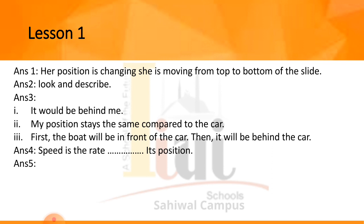Question number 5: write three examples of objects that move at variable speed. Examples include a bicycle, car, boat, surfboard, or a bus. You can write any of these examples as your answer.